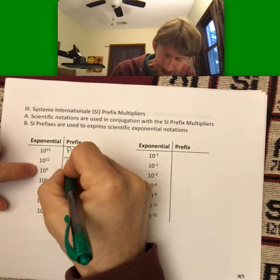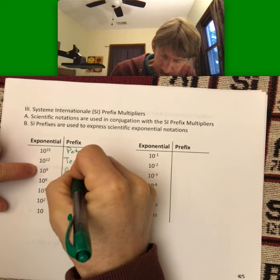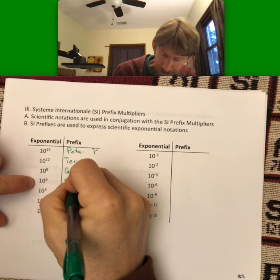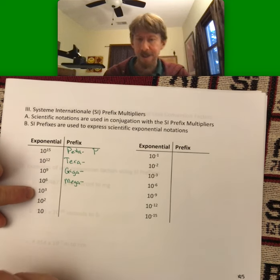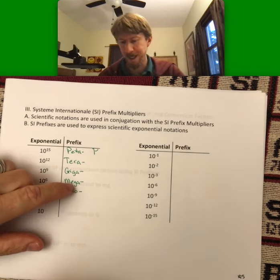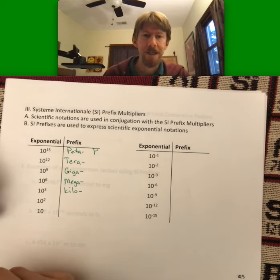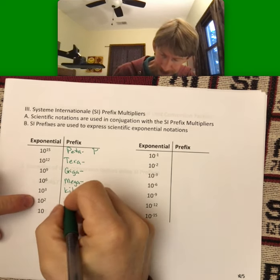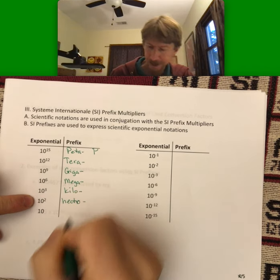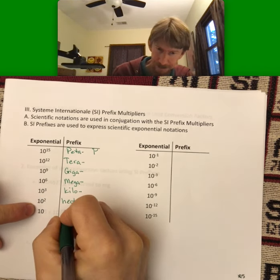10 to the 9th is giga, 10 to the 6th is mega, 10 to the 3rd is kilo with a lowercase k and an o, not an a like the bigger ones. 10 to the 2nd is going to be hecto, and 10 is going to be deca.